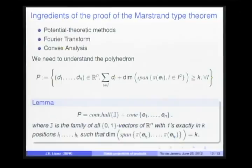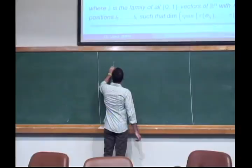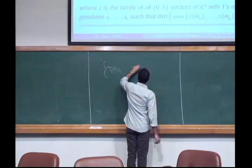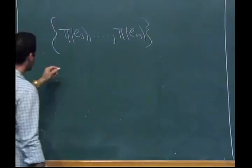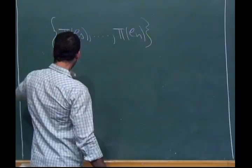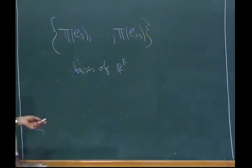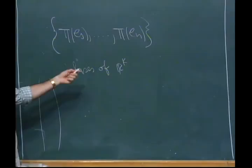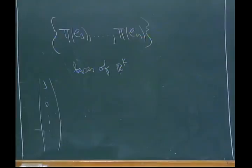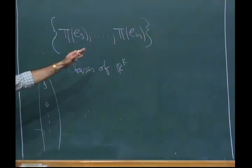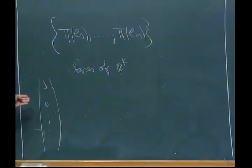In other words, if we look for this set, a loop basis of ℝᵏ in this set, and codify this basis by 0-1 vectors with 1s just in the position of that basis, then these codified basis vectors are exactly the vertices of that polyhedron. This is the key in the proof of the Marstrand-type theorem.